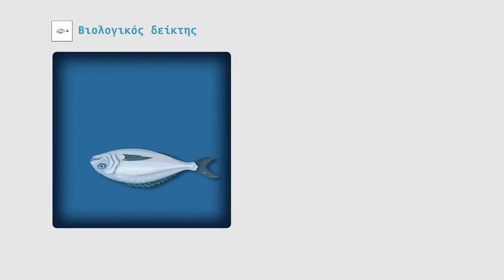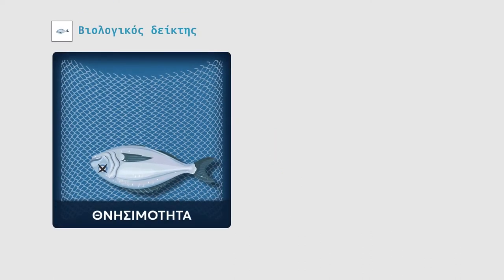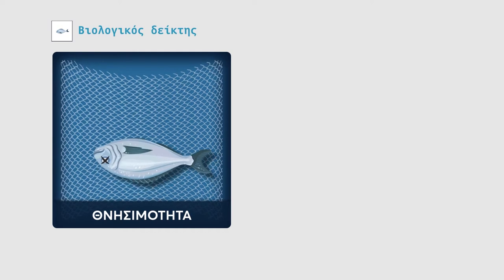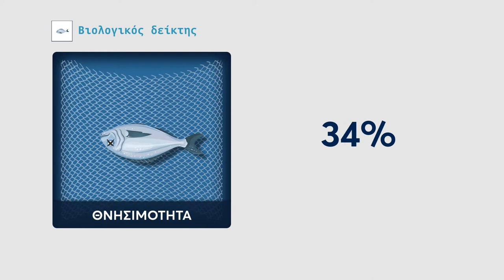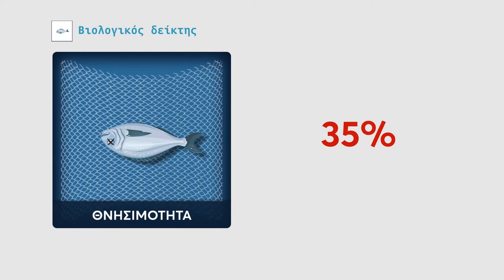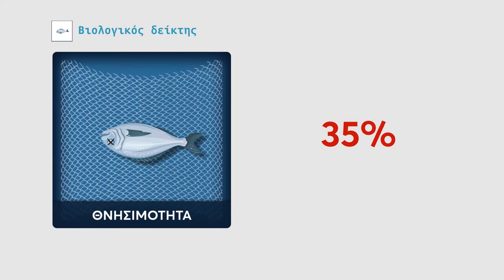The mortality indicator can be a marker for diagnosing and dealing with a possible disease. A practical limit, which should function as a warning signal, would be a mortality rate in a cage of around 35%.